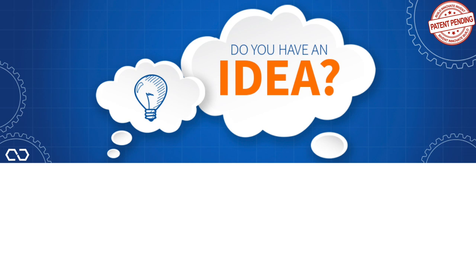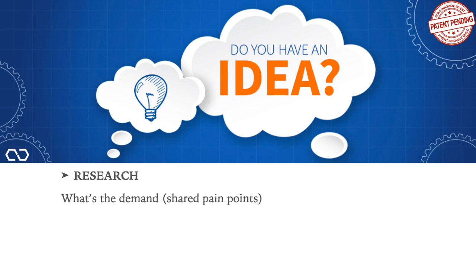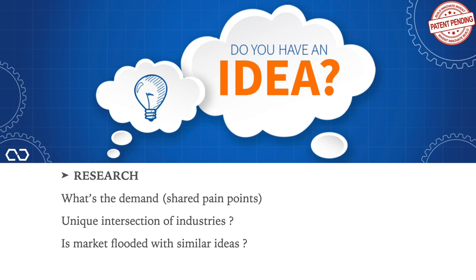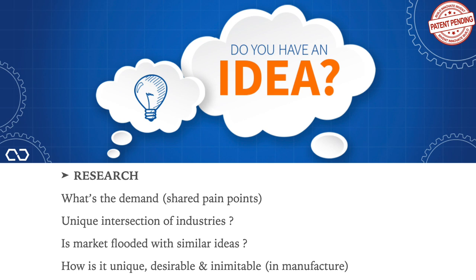There are five simple rules for the methodology. The first one is research. You need to find out what's the demand for that idea you have. Does it have a unique intersection of different industries? We're talking here of different vertical markets, and the more unique industries that your idea intersects, the better the chance of wider success. Is the current market flooded with similar ideas? And yours might be just a slight variation of it. How is it unique, desirable, and inimitable — meaning not easily copied by another market or in the manufacturing business?